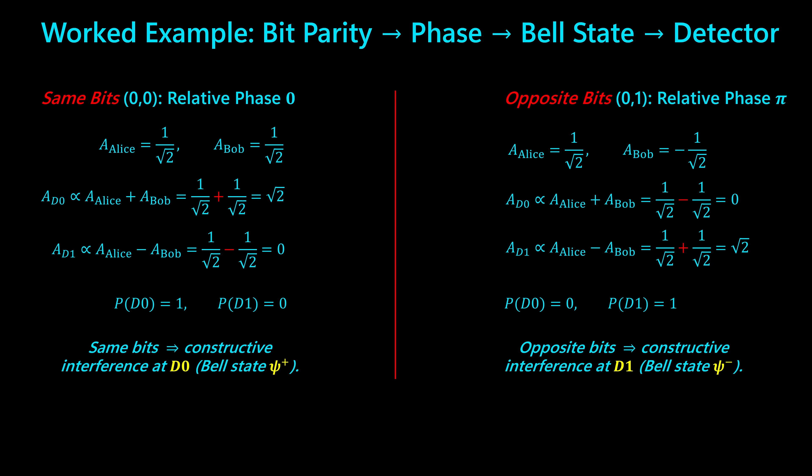On the left, suppose both Alice and Bob send the bit zero. They have chosen the same basis and the same bit value, so there is no relative phase shift between their optical modes. Each one contributes an amplitude of 1/√2. When these amplitudes arrive at Charlie's beam splitter, they interfere constructively along the port leading to detector D0: the amplitudes add — 1/√2 + 1/√2 = √2. Along the port leading to D1, the amplitudes subtract — 1/√2 − 1/√2 = 0. After normalization, the probability at D0 is 1 and at D1 is 0. In the same-bit case, the system always projects into the symmetric Bell state psi-plus, and the click always occurs at detector D0.